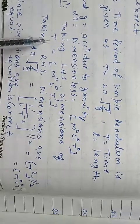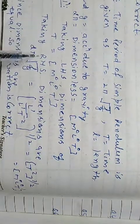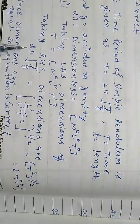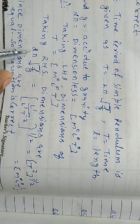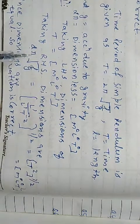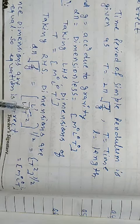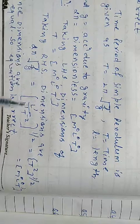Now, left hand side dimensions of time period is m⁰l⁰t¹. Taking right hand side, dimensions are 2π under root l upon g. 2π dimensionless, no need to write the dimension formulas of 2π. l length l¹, g acceleration due to gravity l¹t⁻². Under root is given.